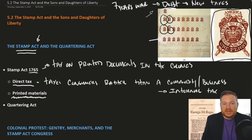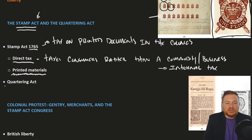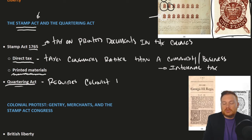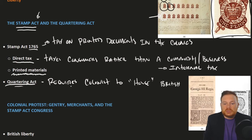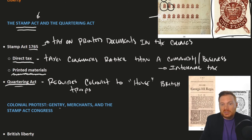In addition to passing the Stamp Act, Great Britain also passes the Quartering Act. The Quartering Act requires colonists to quarter — or to house, to give them a place to live, a place to sleep — British troops. Recall from last section that Great Britain left 10,000 troops in the colonies that weren't there before. Now there's another demand that British colonists give these troops a place to stay. So not well liked.